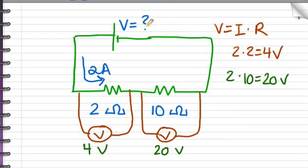Therefore, the battery voltage must be 24 volts. We can check this because the total resistance of the circuit is 12, and the current must equal the voltage of the battery divided by the total resistance. 2 equals 24 divided by 12. It works.